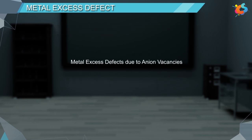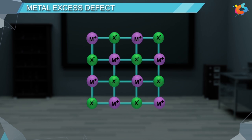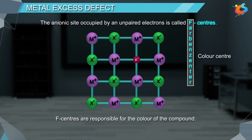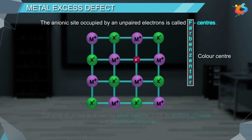Metal excess defects due to anion vacancies. In an anionic solid, an anion may be missing from its lattice site, leaving a hole which is occupied by an electron to maintain the electrical neutrality. The anionic site occupied by an unpaired electron is called F-centers, where F stands for Farbenzenter, which is a German word for color center. F-centers are responsible for the color of the compound. This kind of defect is shown in alkali halides, such as sodium chloride and potassium chloride.